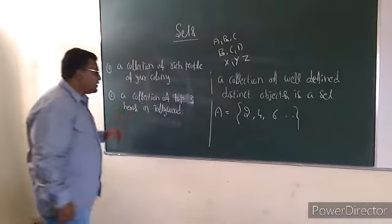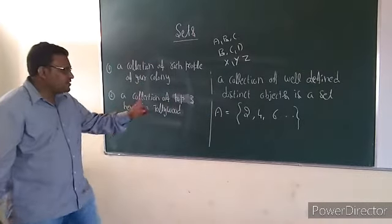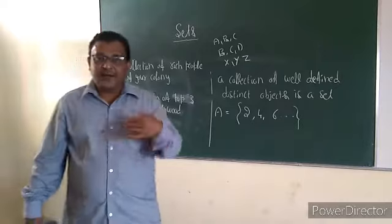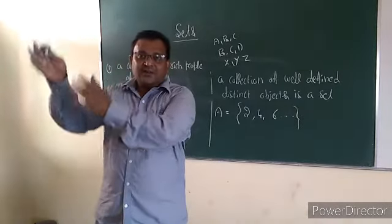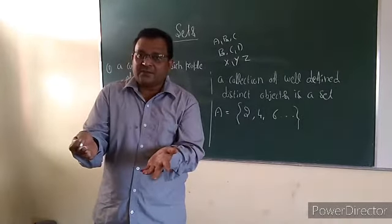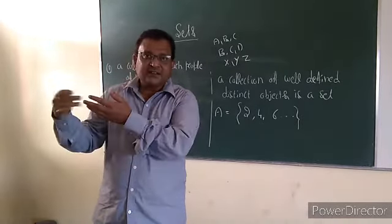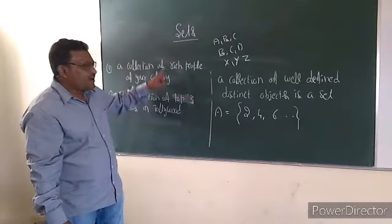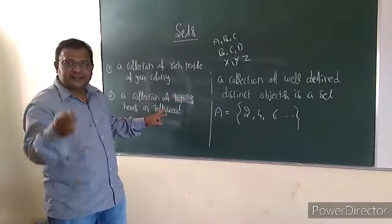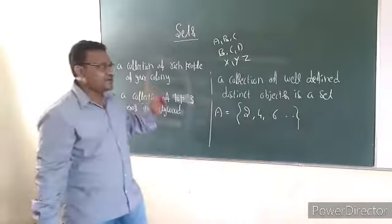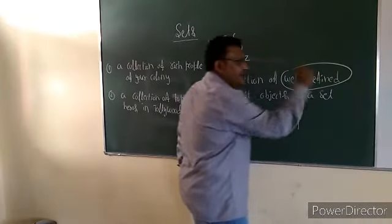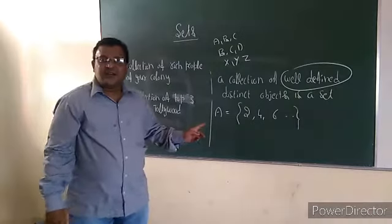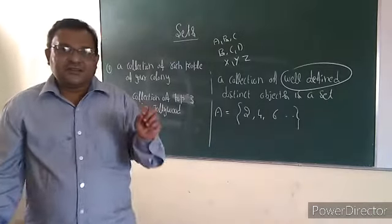Similarly, a collection of top three heroes of childhood — my favourite top three list is different, your favourite top three list is different. They are not defined exactly the same. The well-defined condition fails here. So this collection is not a Set.